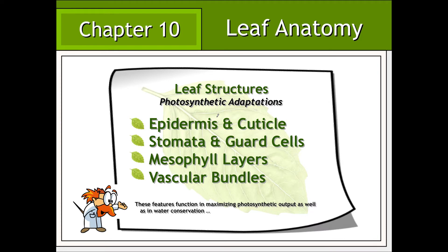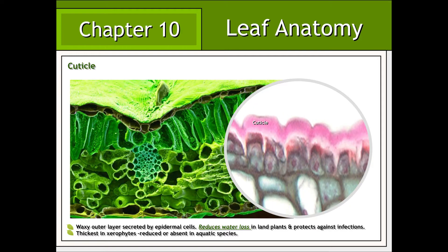The particular structures associated with the C3 leaf that will be the focus of today's lecture include the epidermis, cuticle, stomates and guard cells, the mesophyll layers, as well as the vascular bundles. As we will see, many of these features function in maximizing photosynthetic efficiency as well as in water conservation of the plant body.